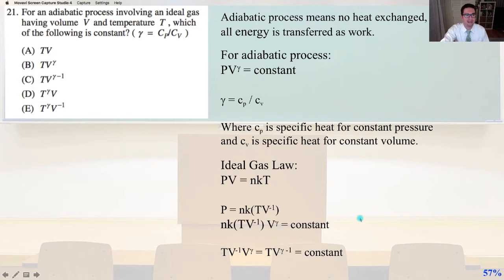For an adiabatic process involving an ideal gas having volume V and temperature T, which of the following is constant, where they say that gamma equals Cp over Cv, where Cp is the specific heat for constant pressure, Cv is the specific heat for constant volume.